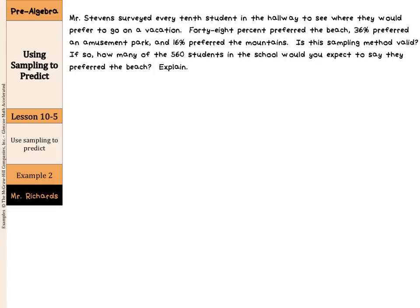Mr. Stevens surveyed every 10th student in the hallway to see where they would prefer to go on a vacation. 48% preferred the beach, 36% preferred an amusement park, and 16% preferred the mountains. Is this sampling method valid — basically, is it unbiased? He is picking every 10th student in the hallway, and that is unbiased. When you look at the different types of unbiased samples — simple random, stratified random, and systematic random — this fits the definition of a systematic random sample.